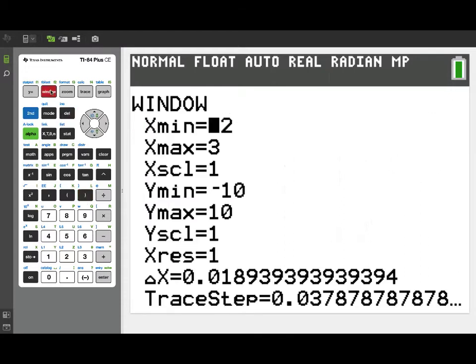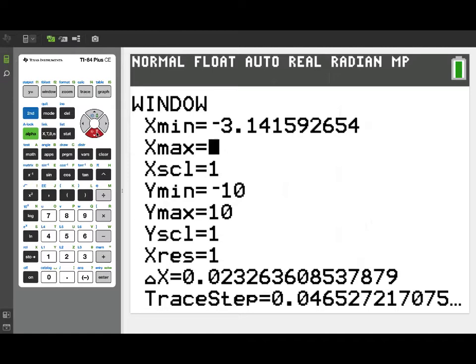Now before we graph, I'd like to recalculate the average value. The interval we're going to use this time is, let's do a full period. So we're going to go from negative pi to positive pi. So I've entered negative pi for my xmin, positive pi for my xmax.